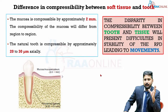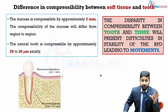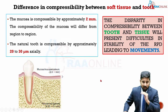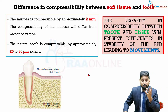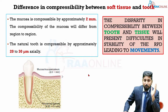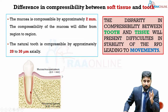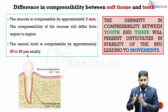You might think that having natural teeth makes the RPD absolutely stable, and in certain ways it does help. However, there are difficulties because of the basic difference in compressibility between soft tissue and the tooth. On average, the mucosa can be compressed by up to two millimeters — varying by region — whereas the natural tooth is compressed within its socket only 20 to 30 microns. This is a huge difference in compressibility.